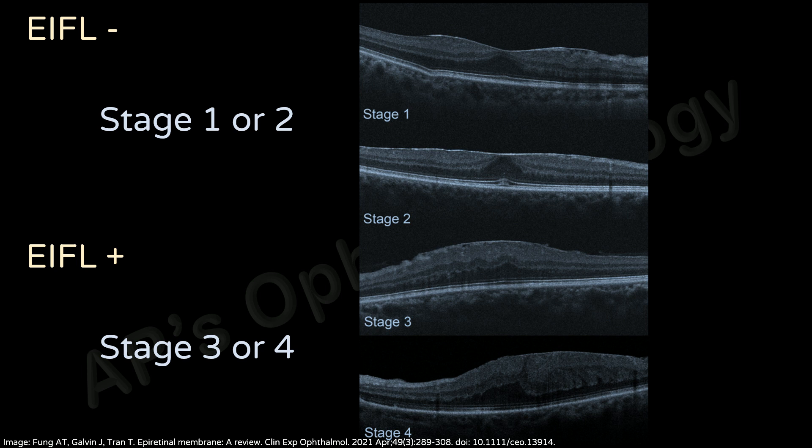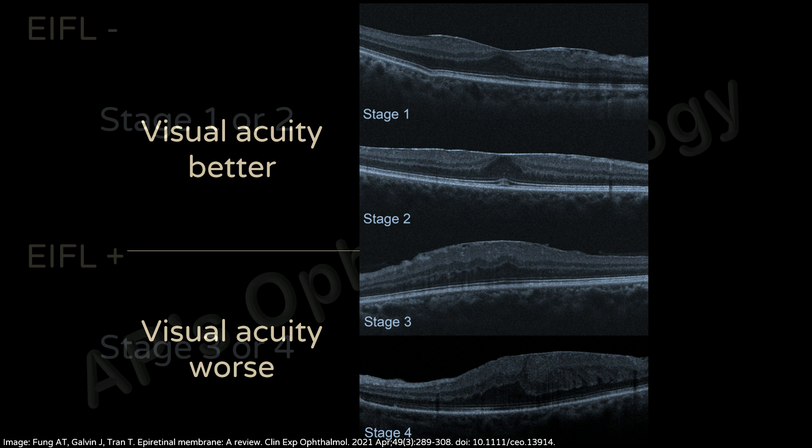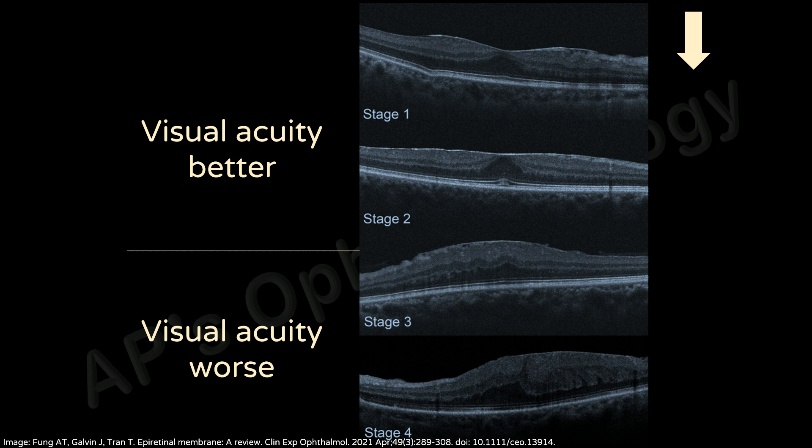To put it simply, look for the presence of IFIL. If it is absent, it's stage one or stage two: if the foveal contour is fairly normal, it's stage one, and if the foveal contour is lost, it is stage two. If IFIL is present, note whether the inner retinal layers are easily made out — if yes, it's stage three; if the distinctions between layers are not made out, it is stage four. Visual acuity is better in stages one and two, and retinal thickness is lesser in stage one compared to stage four ERMs.